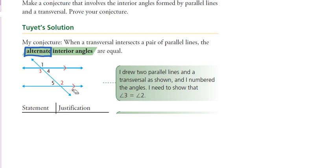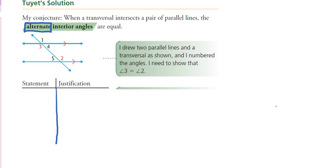So what conclusions can we draw about alternate interior angles? Looking at this diagram, what would your guess be — are alternate interior angles equal, supplementary, or something else? Equal? Okay, so angles 3 and 2, and 4 and 5, look like they would be equal to each other. We're going to work through a little two-column proof to verify that, using already known properties of parallel lines and transversals.